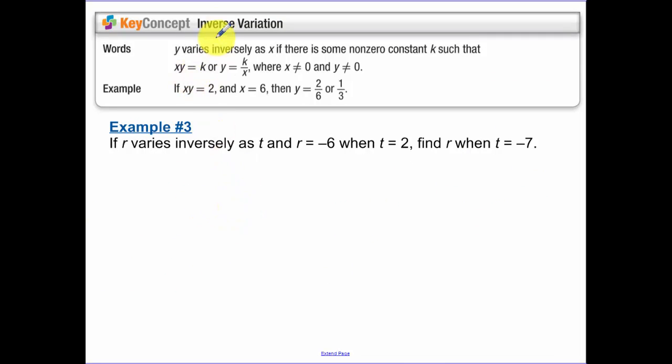Inverse variation. This is really what we're talking about in this chapter. If y varies inversely as x, there's some constant k such that x times y equals k or y equals k over x. This x times y equals k, that's going to be super important to us.